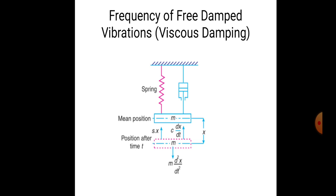Now see the figure. The figure contains a spring having mass and stiffness k, or you can say s. Then there is a damper — the damper coefficient c, you can say the damping factor.